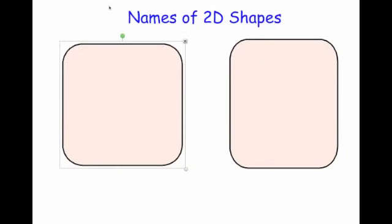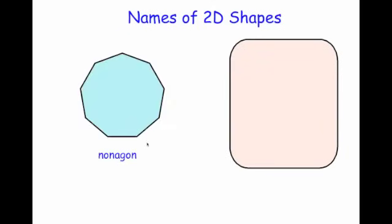Let's look at a couple more. Here we have got a nonagon. A nonagon has nine straight sides if you count them: one, two, three, four, five, six, seven, eight, nine. It's called a nonagon.